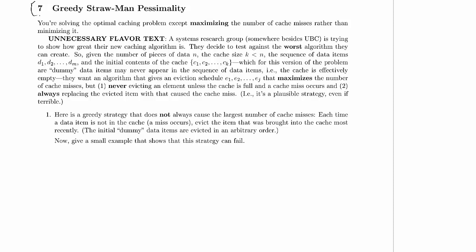And then initial contents of the cache, which are c1, c2, and so on and so forth, up to ck, which for this version of the problem are dummy data items that may never appear in the sequence of data items. So in other words the cache is effectively empty. We're loading up the cache with data items but they're fake data items so they're all going to cause cache misses.